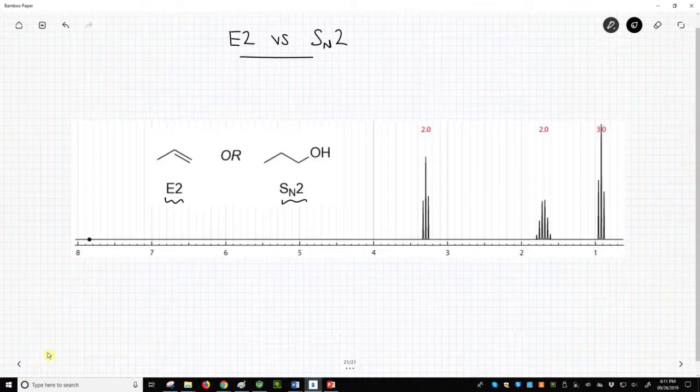The E2 product should have alkene hydrogens, which appear in the 5-6 ppm range. The spectrum shows nothing in that region.